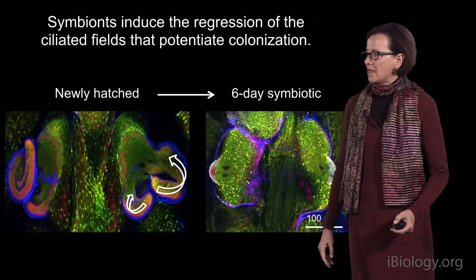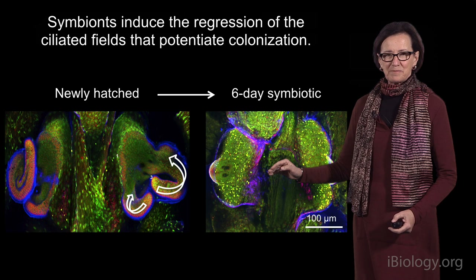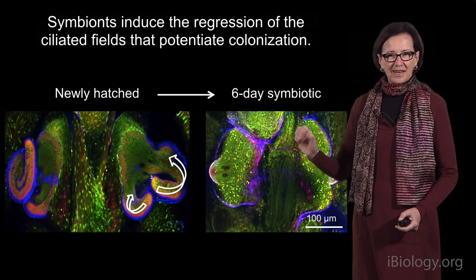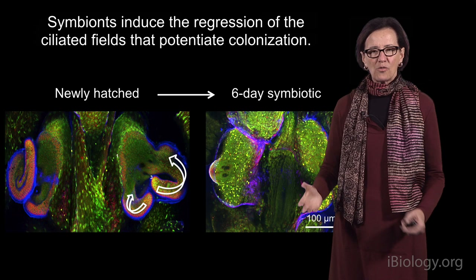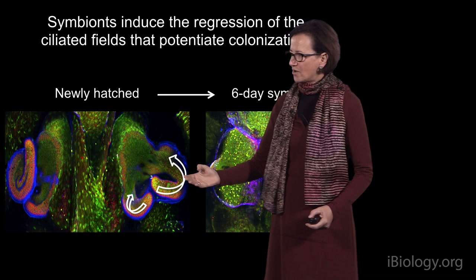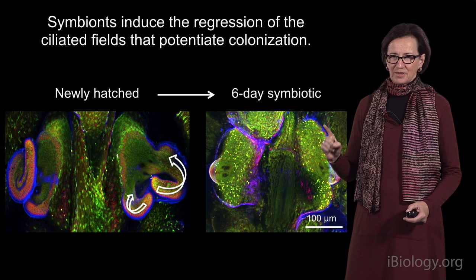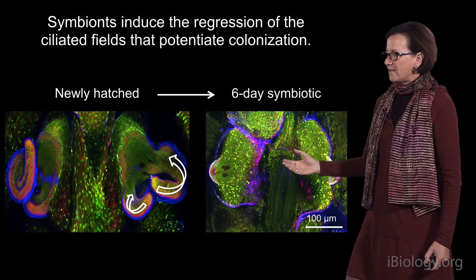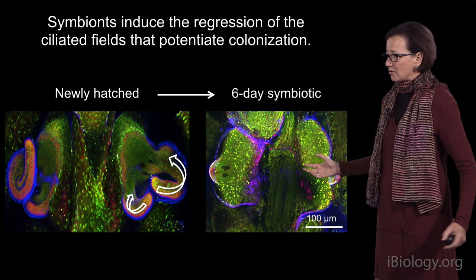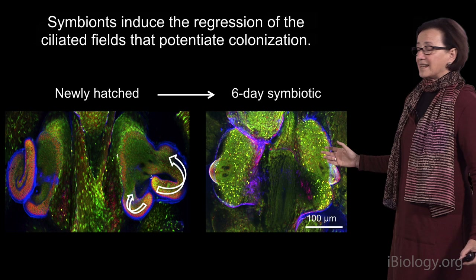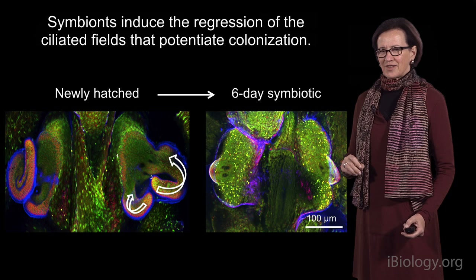What about development? We found that the symbionts, once they get into those crypt spaces, induce the loss of the tissues that were absolutely essential for their recruitment — it's as though they go in and shut the door behind them. That ciliated surface begins to be lost by cell death. The bacteria are deep inside the tissues and somehow remotely induce the loss of the superficial epithelium, though we're not quite sure how. By five to six days, this juvenile light organ no longer has those complex ciliated surfaces and is going on to become a mature light organ. The bacteria are essential for inducing development.